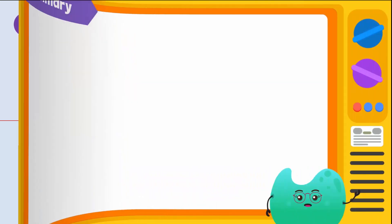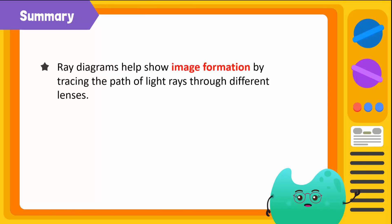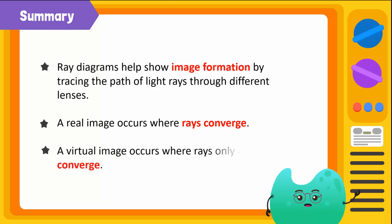Let's summarize what we have learned in this video. Ray diagrams help show image formation by tracing the path of light rays through different lenses. A real image occurs where rays converge. A virtual image occurs where rays only appear to converge.